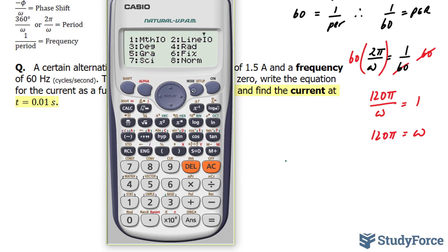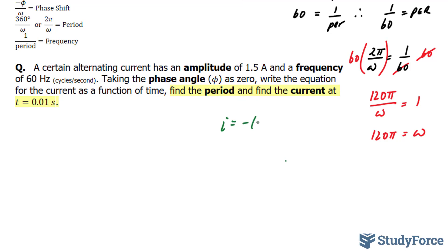Ours is in degrees right now. To do that, I simply change it to radians, click equals, and I end up with a current of negative 0.8816. Current is equal to negative 0.8816 amps.